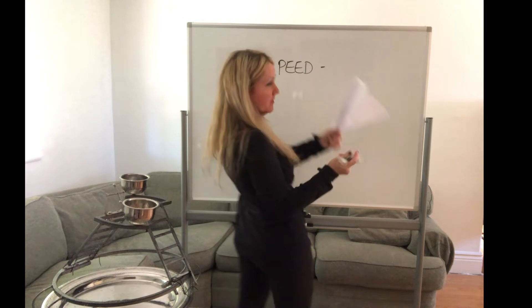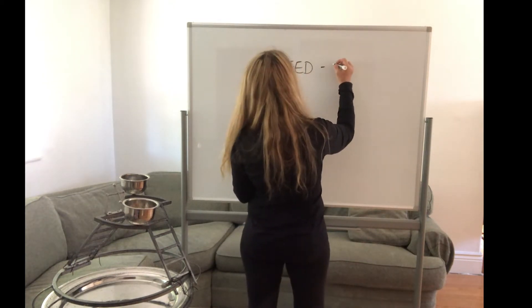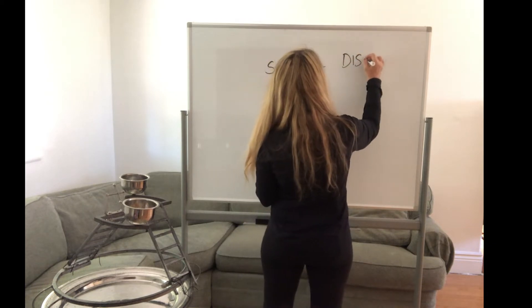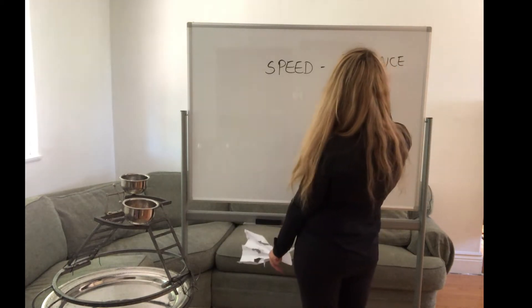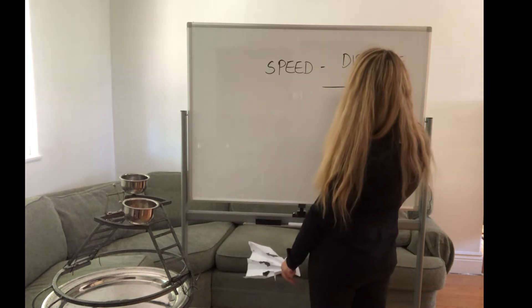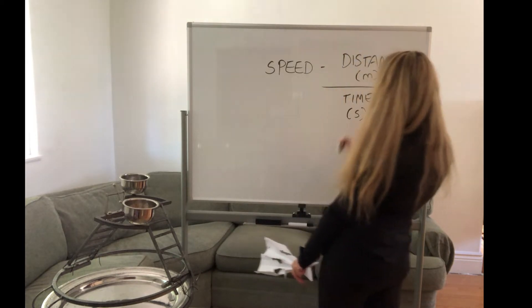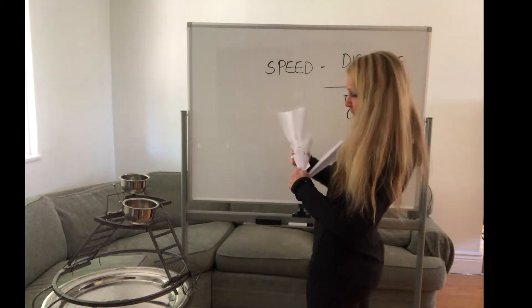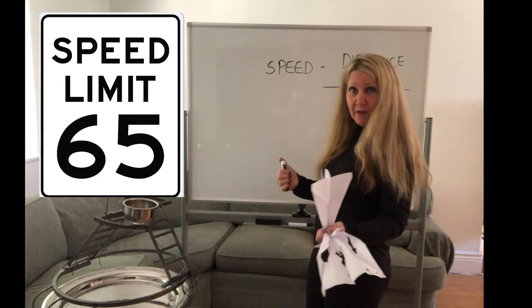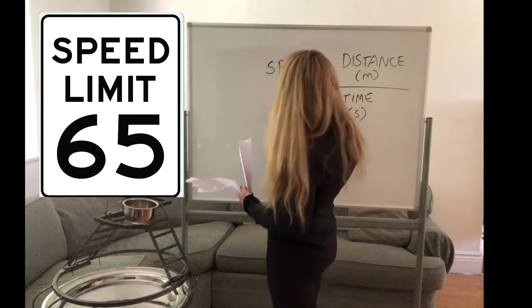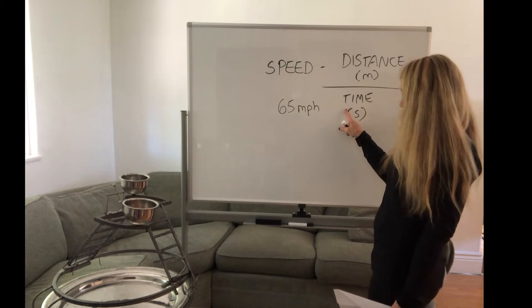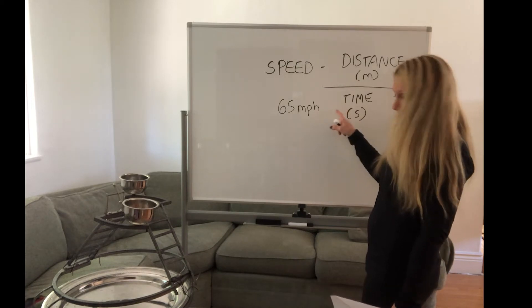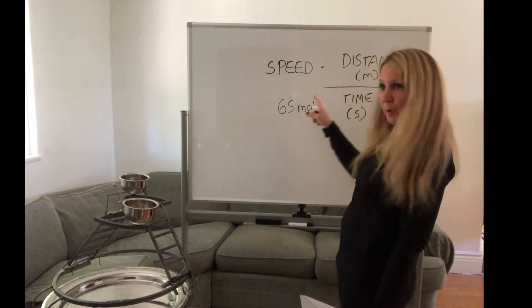Figure out what the speed is of each of these planes — how fast the airplane travels. Speed is measured as distance over time. For example, if you get on Highway 280 and see the speed limit sign that says 65 miles per hour, miles is the distance and hours is the time. That's what speed is.